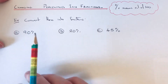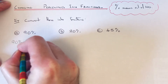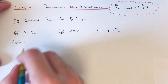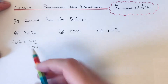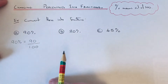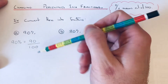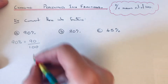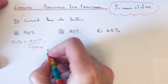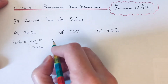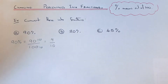So we've got to convert 90% into a fraction. 90% is the same as 90 out of 100, so this is our fraction. All we need to do now is simplify the fraction. The biggest number 90 and 100 can be divided by is 10. So 90 divided by 10 is 9 and 100 divided by 10 is 10. So you end up with the fraction 9 tenths.